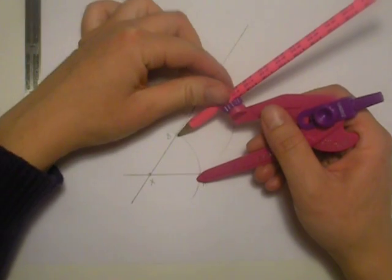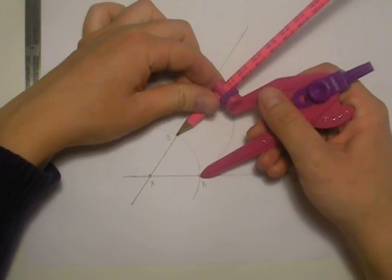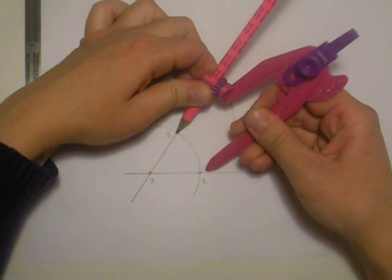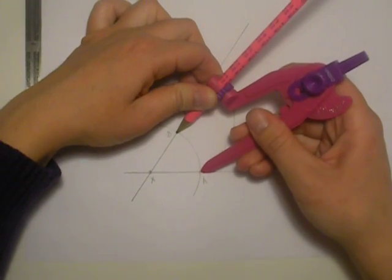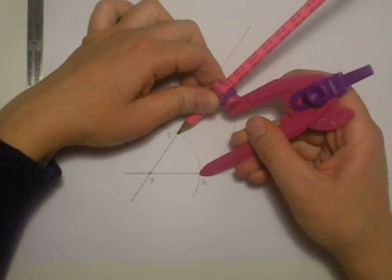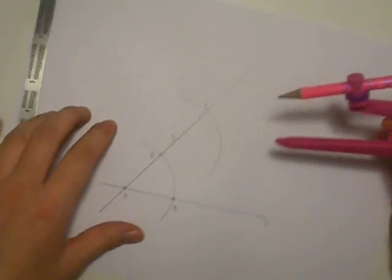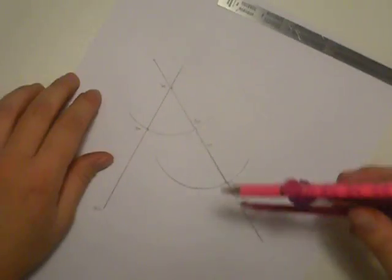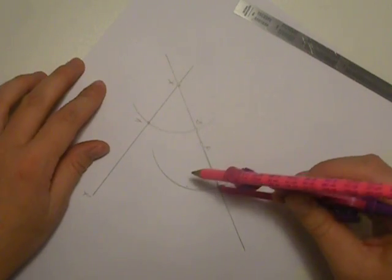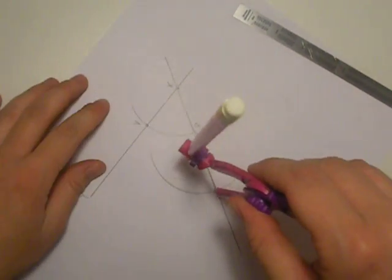We need to measure the distance between B and A. Okay, we got that. Personally, I prefer to turn the page. It just makes it easier for me to work with the compass. You don't have to do that if you don't want to.